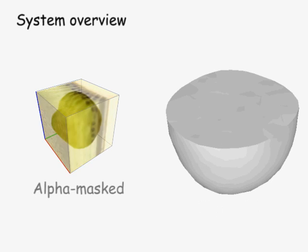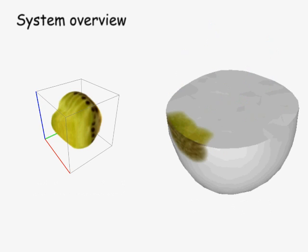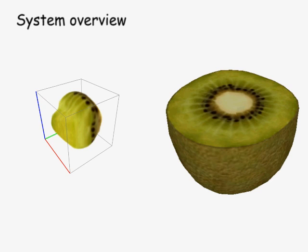In our approach, the input solid texture is alpha-masked and is pasted onto the model along the local tensor field. We repeat this process until the whole model is covered with overlapped solid textures.